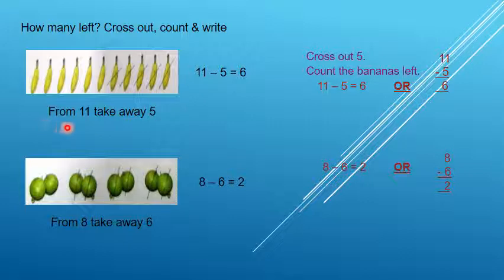From 11 take away 5. So how many bananas? Count all bananas. 1, 2, 3, 4, 5, 6, 7, 8, 9, 10 and 11. So 11 bananas. Minus 5 bananas.